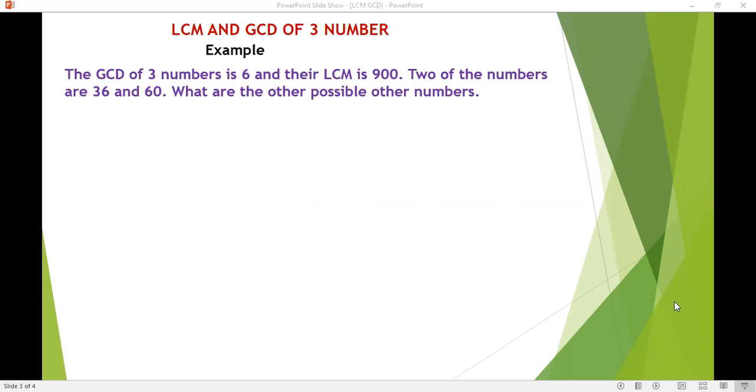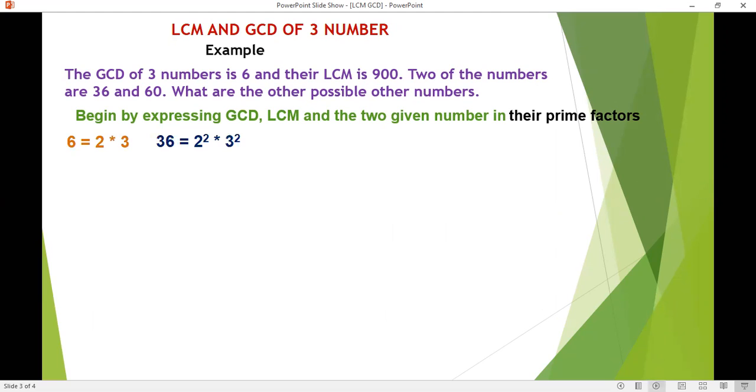Looking at a second example, of course we'll start by expressing everything given there in form of prime factors. So the prime factor of 6, the prime factor of 36, prime factor of 60, the prime factor of 900.